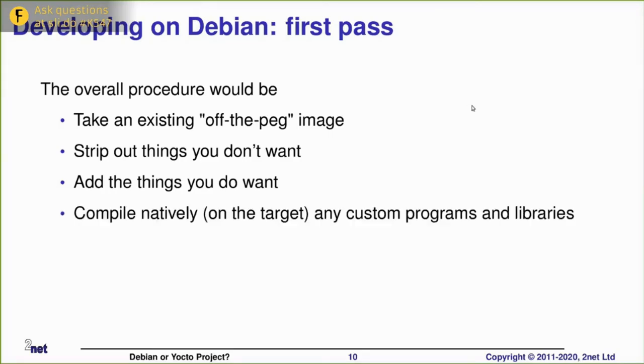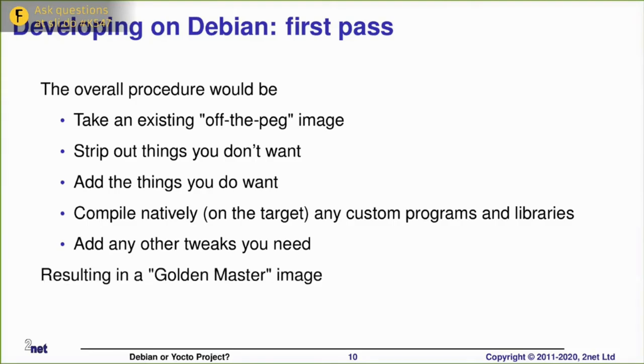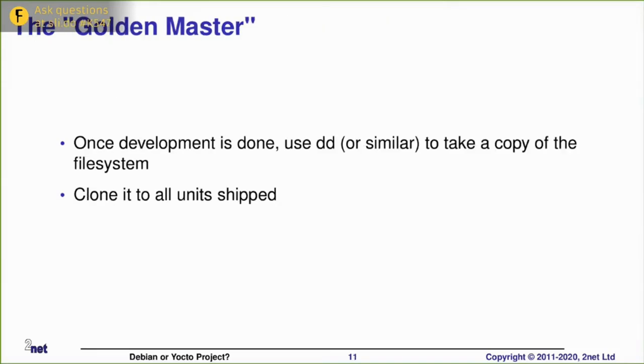I may have some code that needs to be compiled natively, something C and C++. I'll go through and compile those. Typically I would do that on the target board itself, because the target boards, these distros, they have a full development environment. They have GCC and G++ and everything else. Then add any other tweaks, startup scripts, various other configurations. And at the end, we produce an image we call the golden master. This golden master now has everything configured correctly. It does what I want, runs my applications, and I'm ready to go.